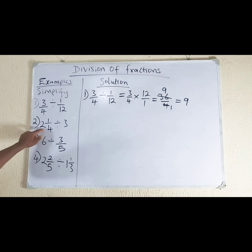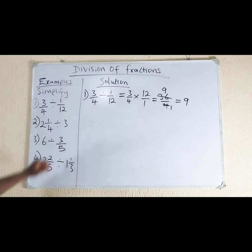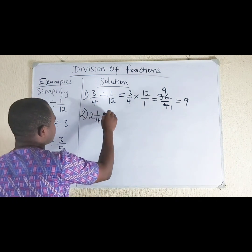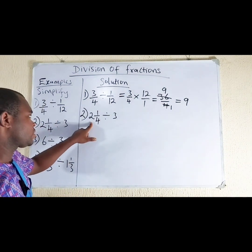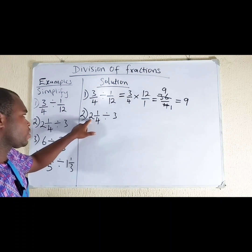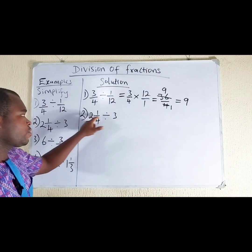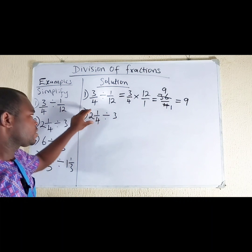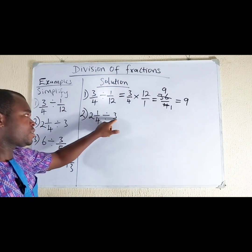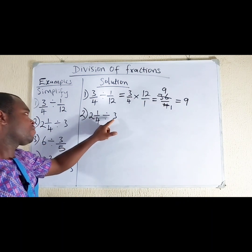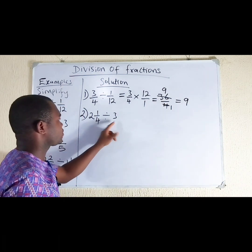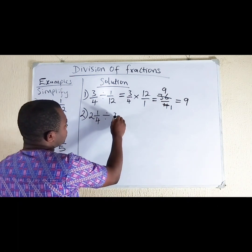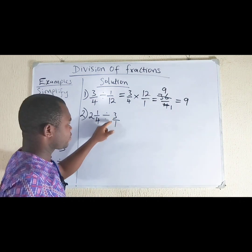Number 2: we have 2 whole number 1 over 4, divided by 3. If you look at this one, we have a mixed number and a whole number. First of all, we are going to make the whole number look like a fraction. So, we have 3 over 1.